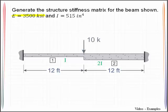Modulus of elasticity of 3500 KSI, moment of inertia 515 inches to the fourth, where member 1 has the properties of I and member 2 is twice that.